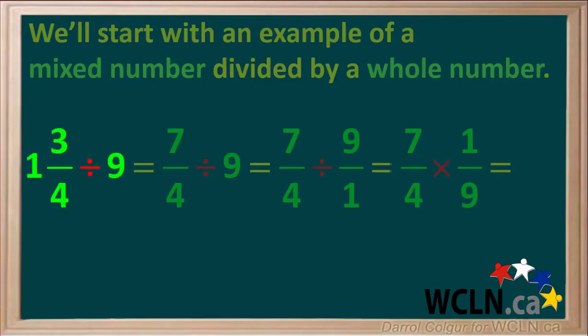We can summarize by stating that 1 and 3 quarters divided by 9 is equal to 7 over 36. Since 7/36 is a proper fraction, we leave it as it is.